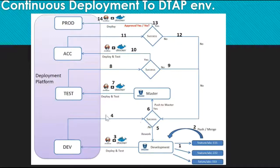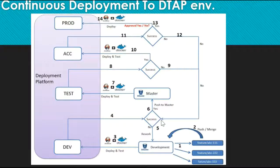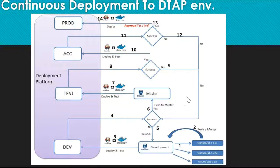If the application runs successfully in the development environment, the changes will be pushed back to the master branch. If it does not run successfully, the development branch will be updated — the developer will pull the code from the development branch and make changes to fix the error. Once the application is running successfully in the development environment, the changes are pushed to the master branch. The master branch is the final version which will be moved to the test environment, containing all the latest changes including every feature branch change. This is the code that will ultimately be deployed to production.